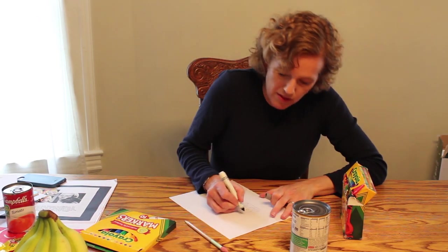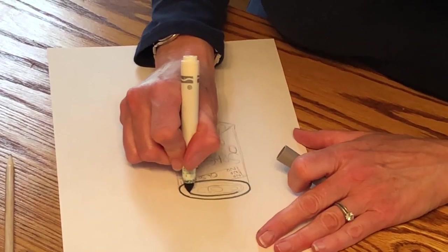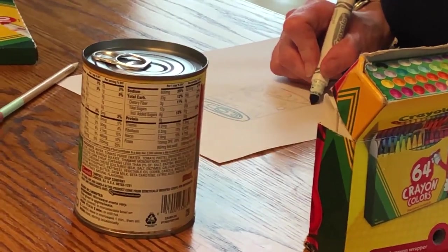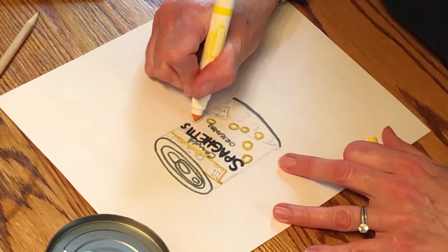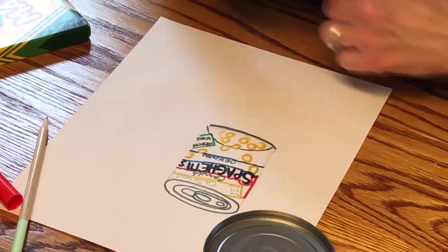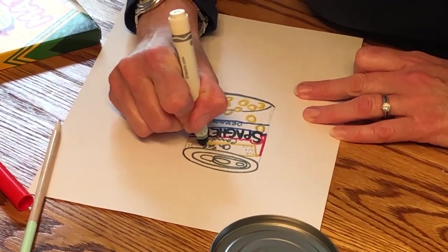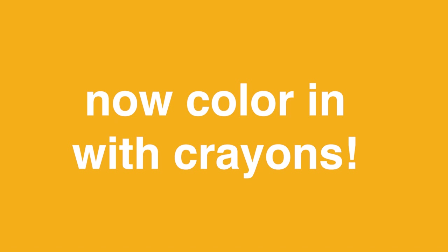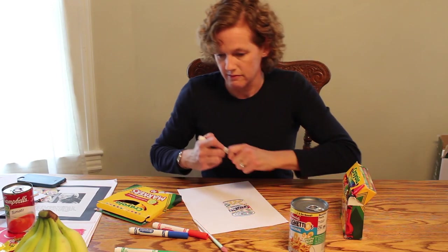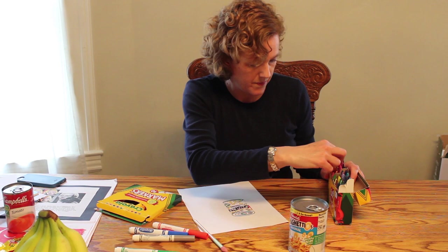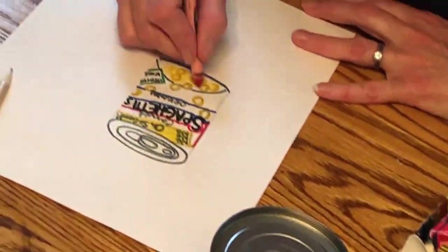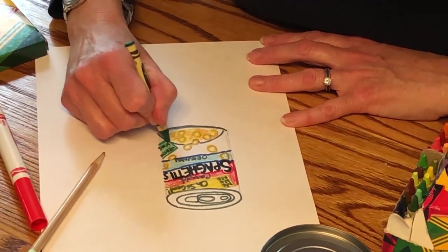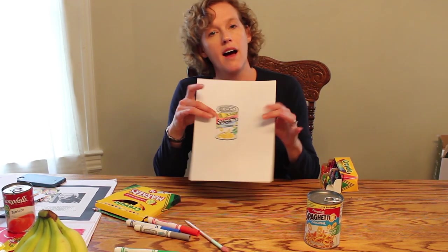So the top of my can is gray, so I'm going to start with that. I'm going to get a yellow. Voila! My spaghetti can.